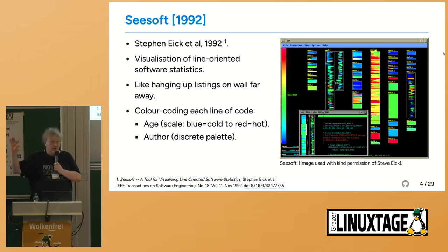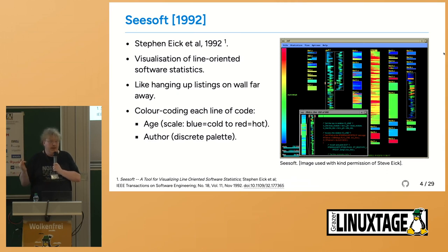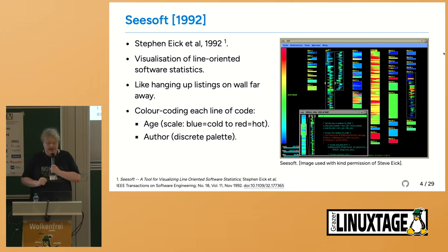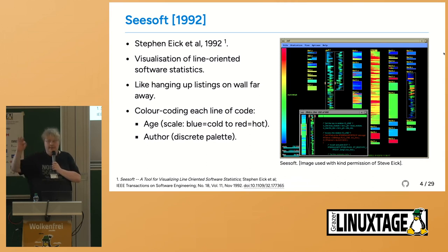Each pixel row represented a line of code, and the default color coding shown here is age of each line of code with a continuous color scale — blue meaning cold, so modified a long time ago, and red meaning hot. You could also switch to a palette where you could see the last author of each line of code.